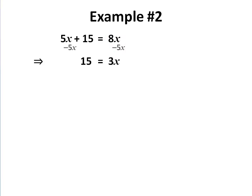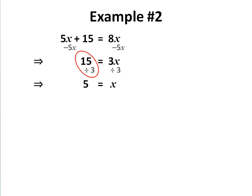Then we do one separate step on a new line to remove the 3 — we divide both sides by 3. That leaves the x, and I get the order of my division right: 15 divided by 3 is 5. x is equal to 5.